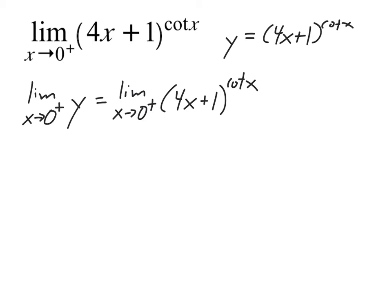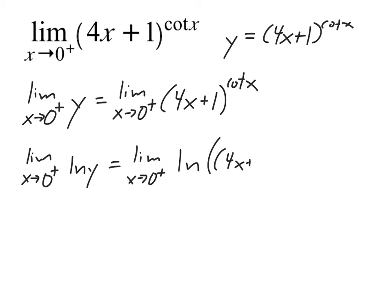Once we've written it like this — where we've gone ahead and written it as the limit of y equals the limit of our function — we can now look at getting rid of our exponent, the exponent that's causing it to be indeterminate. So we're now going to take the natural log of both sides. When we do that, we have the limit as x approaches 0 of the natural log of y equal to the limit as x approaches 0 from the right of the natural log of 4x plus 1 to the cotangent of x.